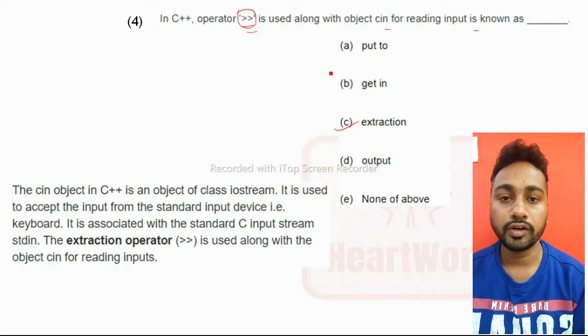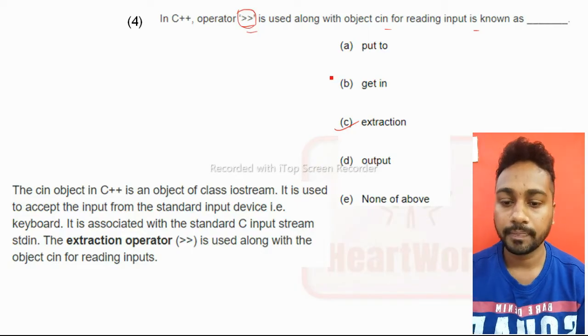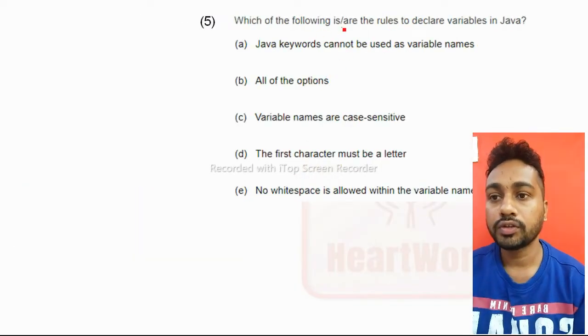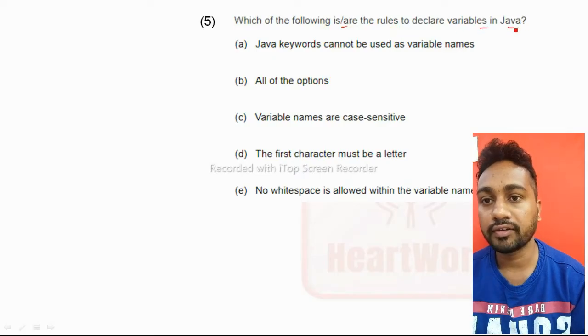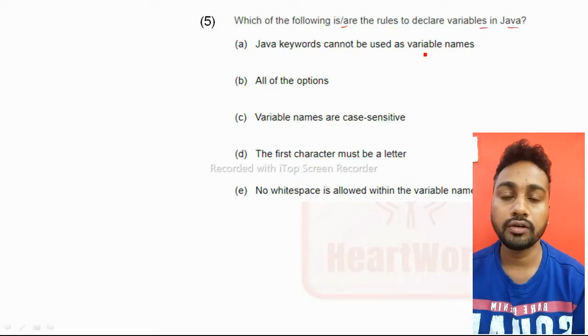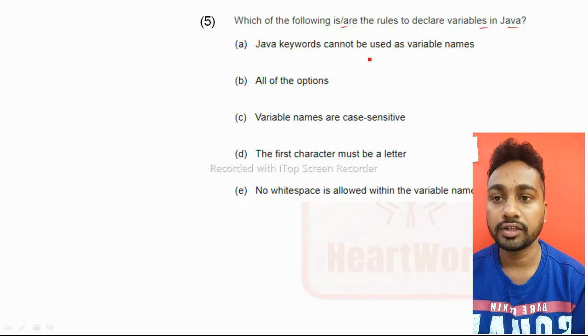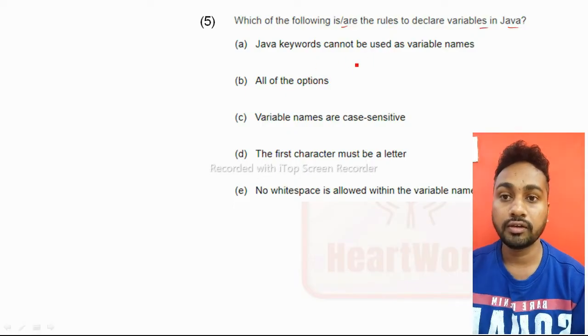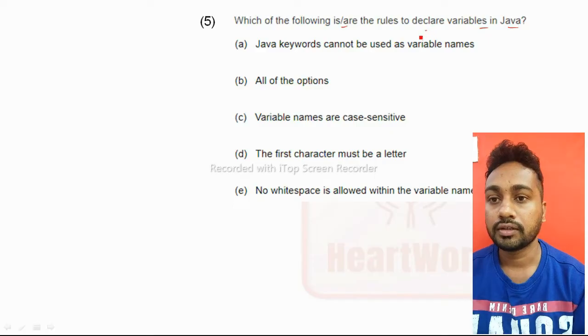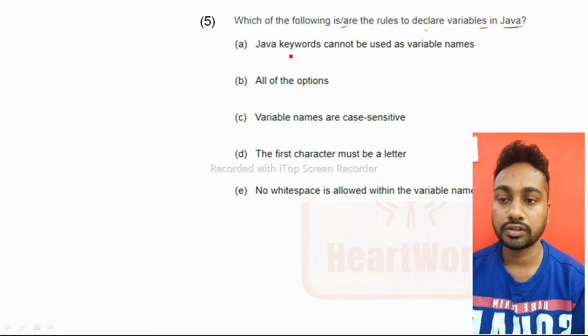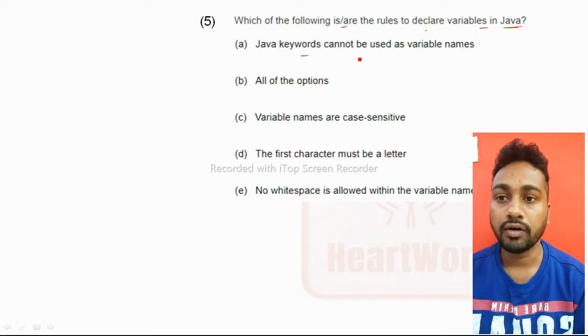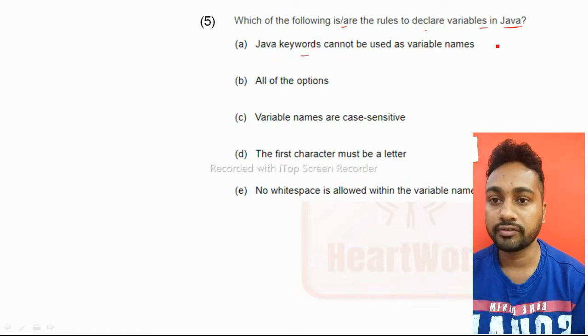Which of the following are the rules to declare variables in Java? In Java to declare the variables, what are the rules? First option: Java keywords cannot be used as variable names. This is correct about the variable in Java. Variable names are case sensitive, this is also correct.